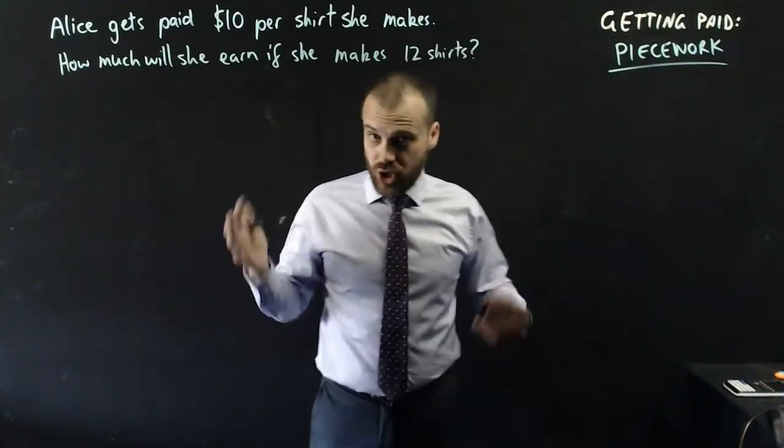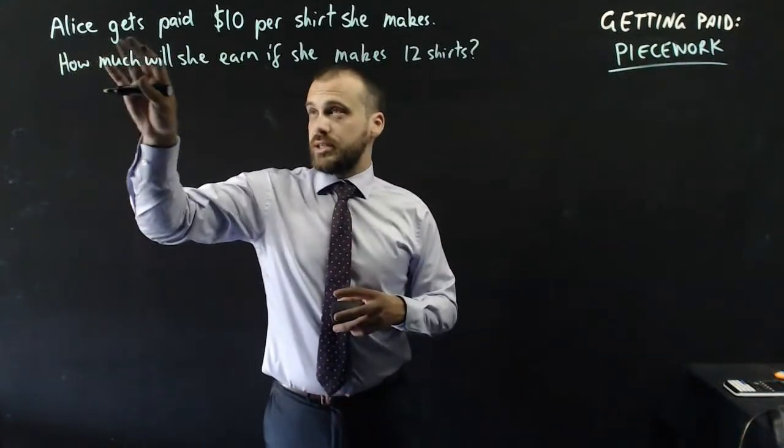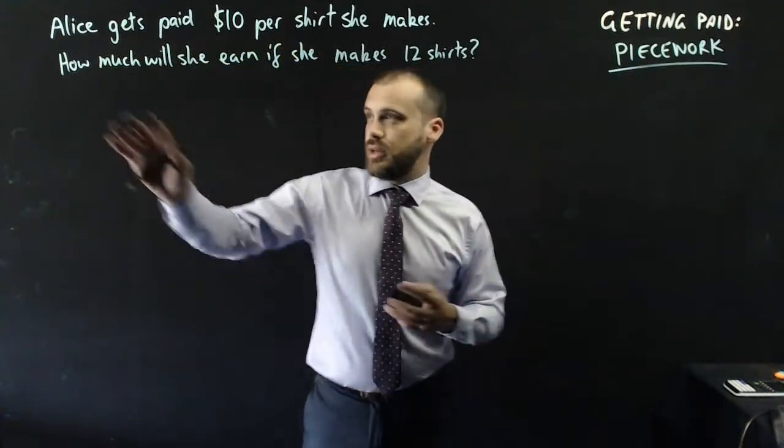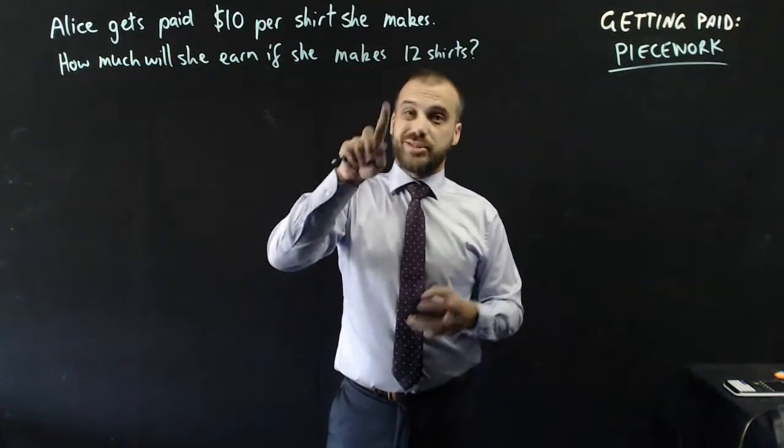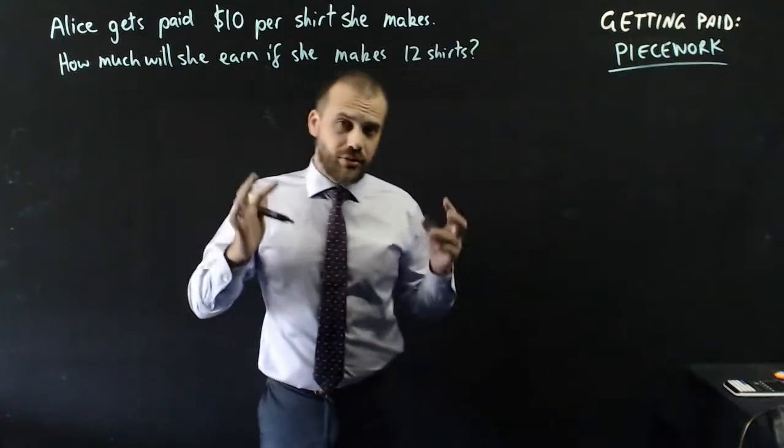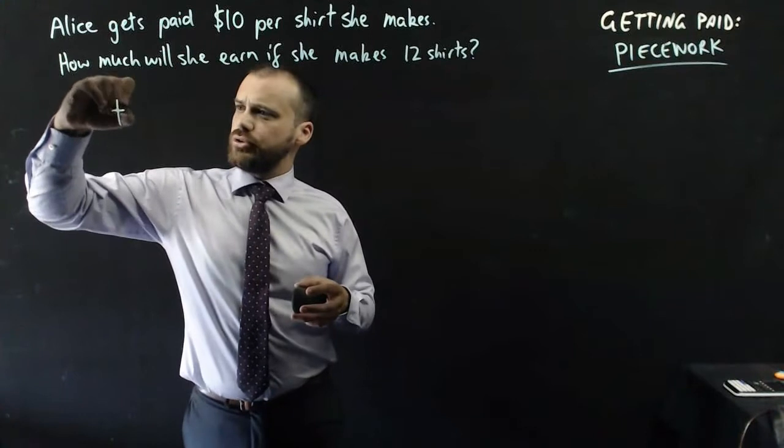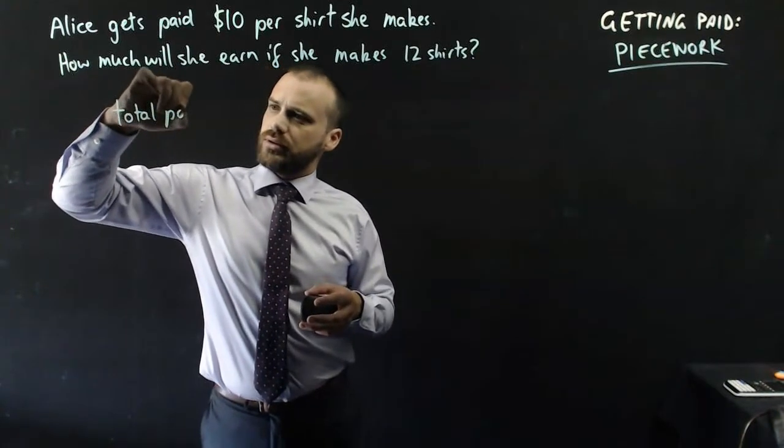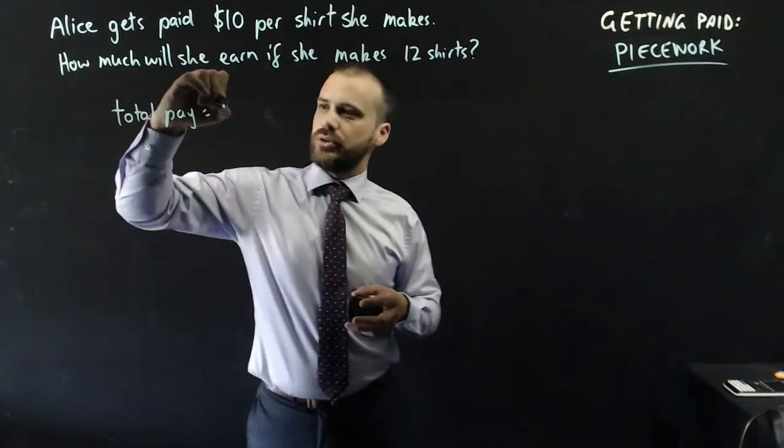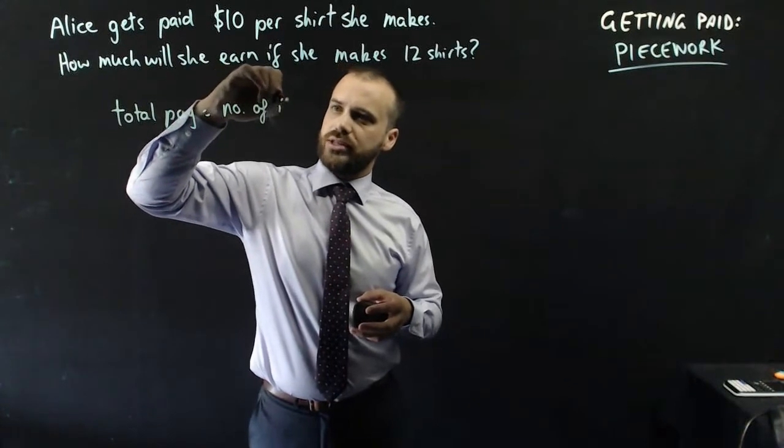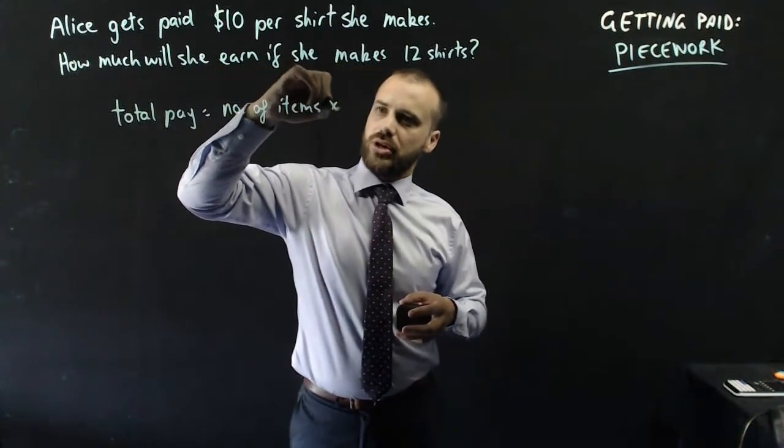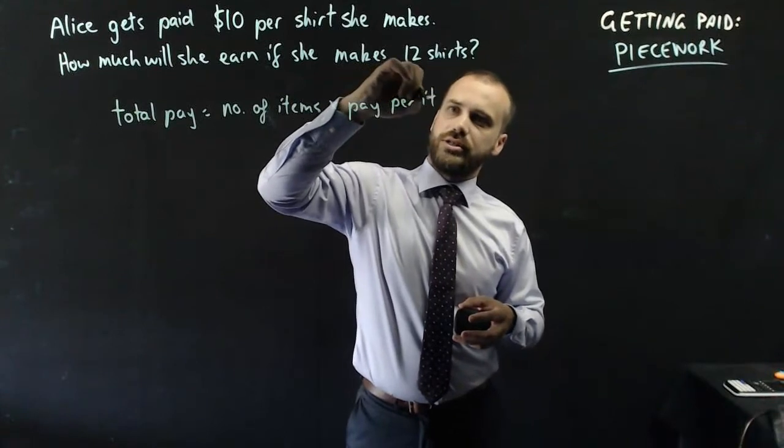So Alice is a sewer, she sews clothes. Alice gets paid $10 per shirt she makes. How much will she earn if she makes 12 shirts? So relatively straightforward question, you can probably do it in your head.